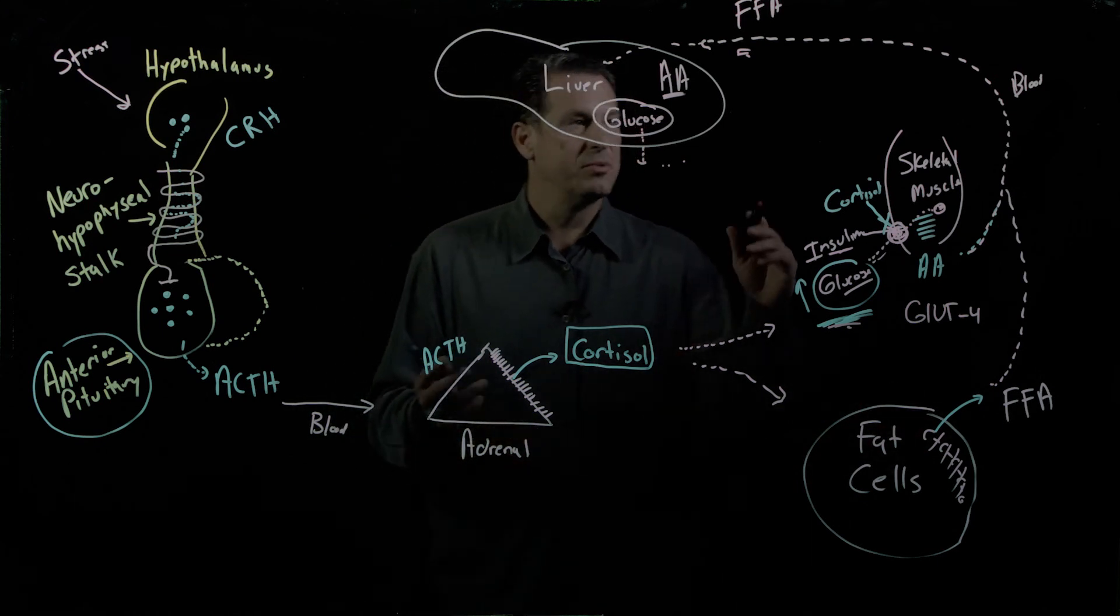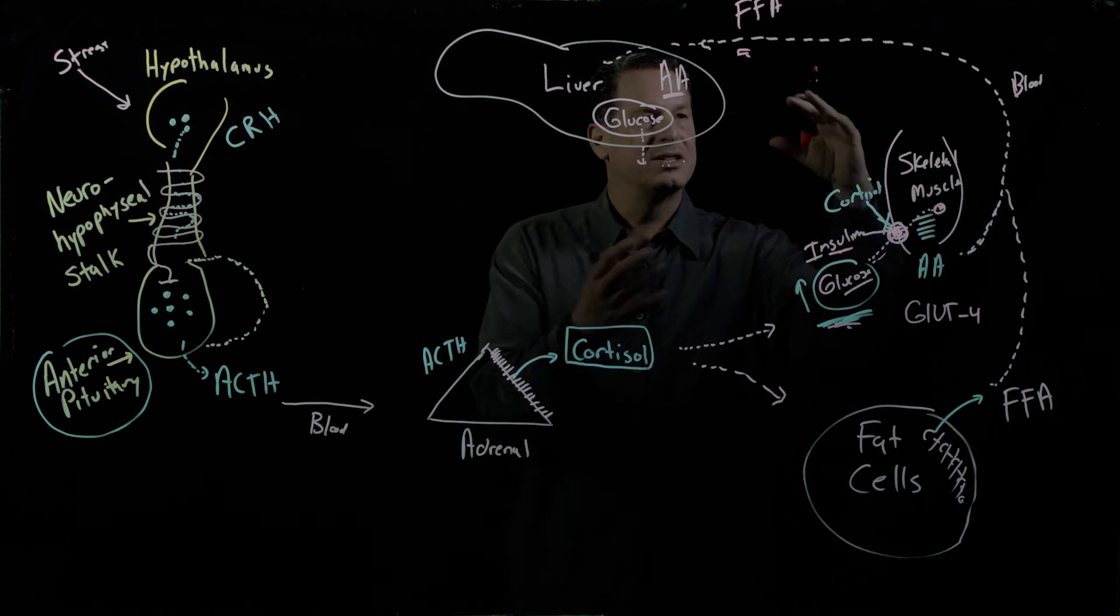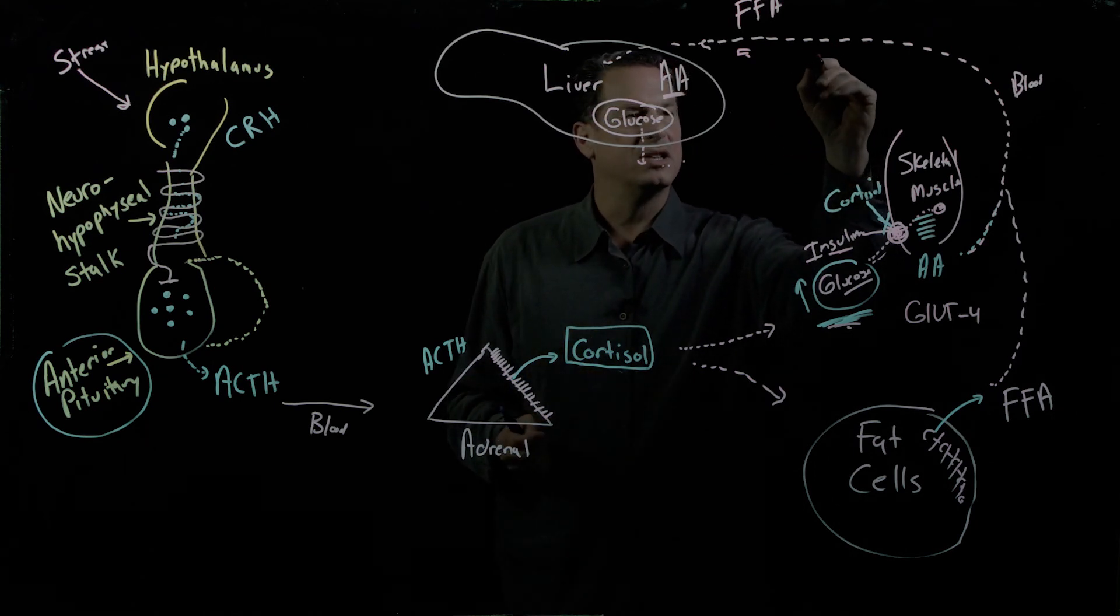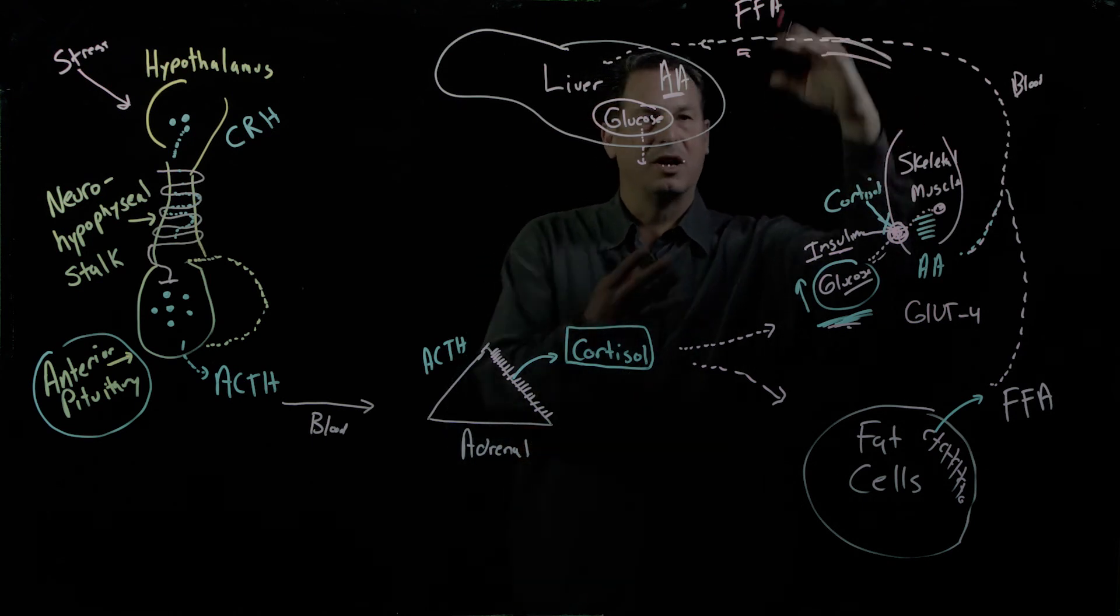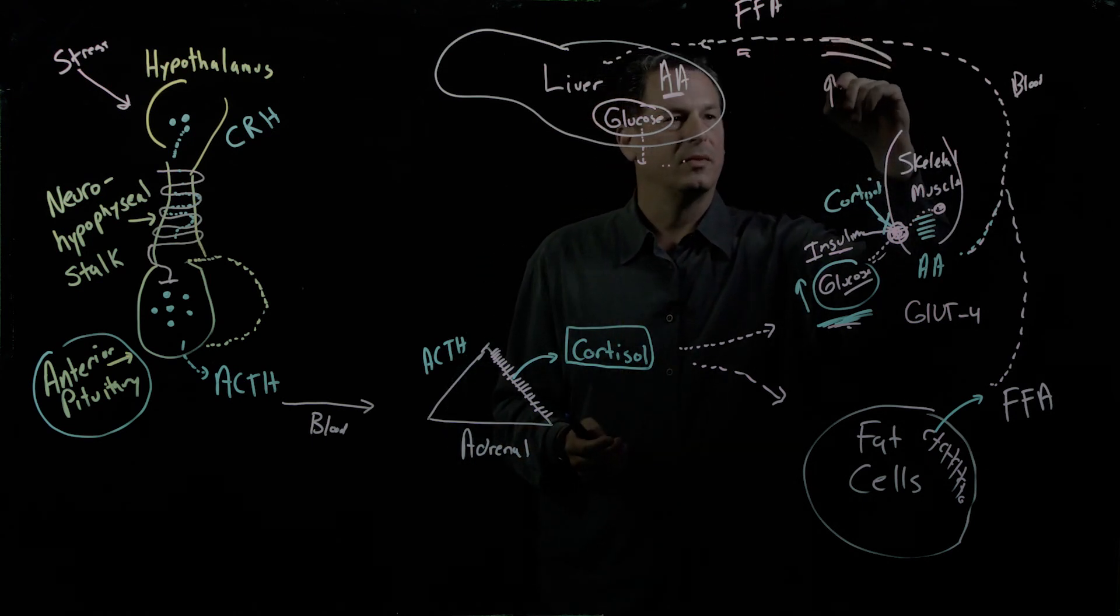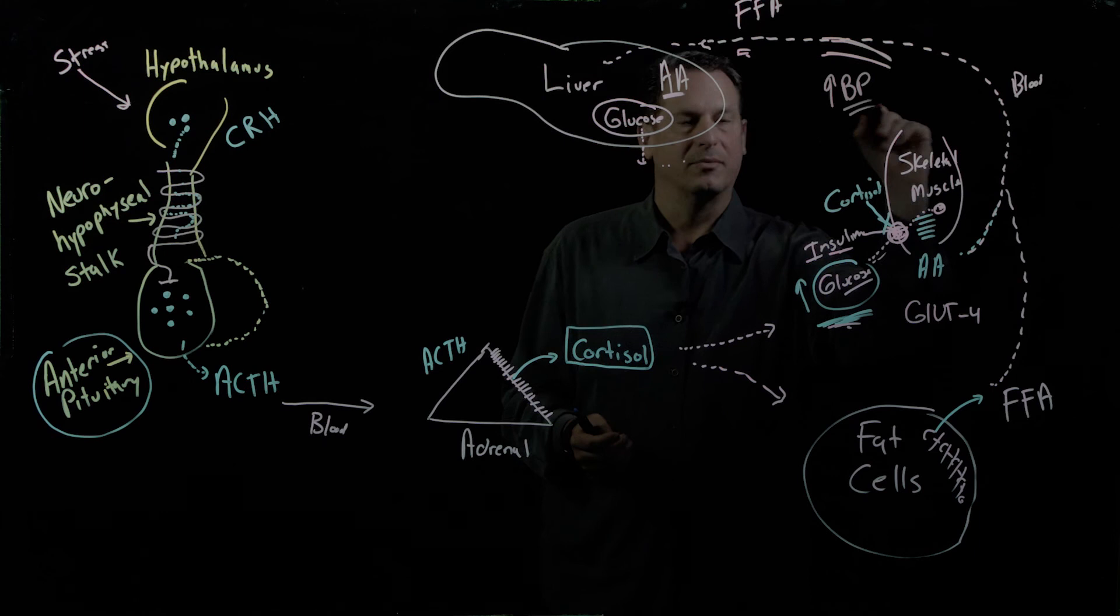Cortisol also, by the way, causes or increases the activity of catecholamines in constricting blood vessels. So it also has a blood pressure increasing effect.